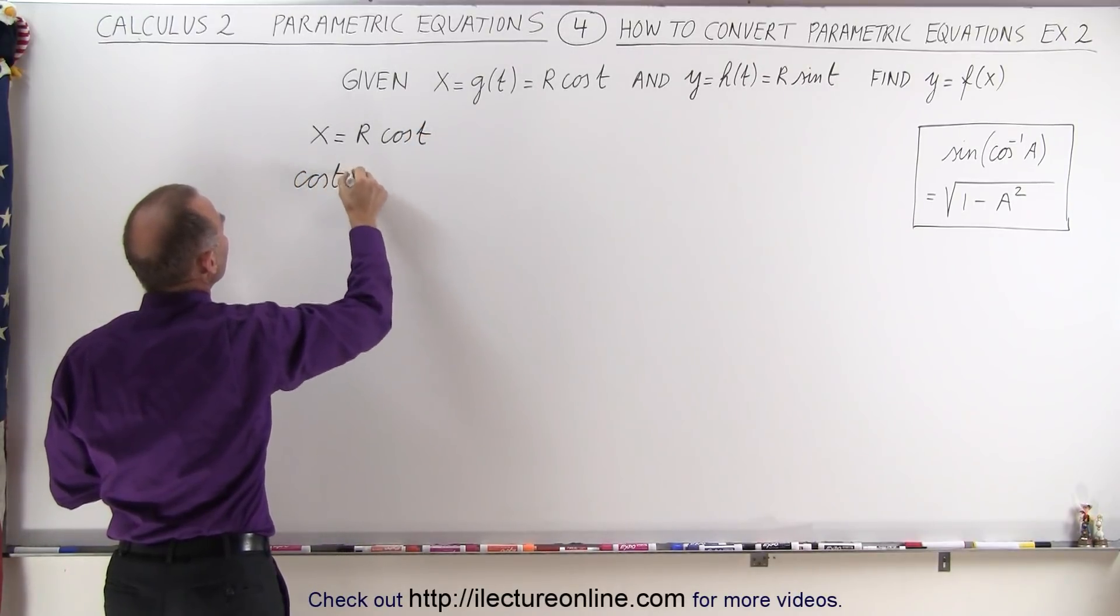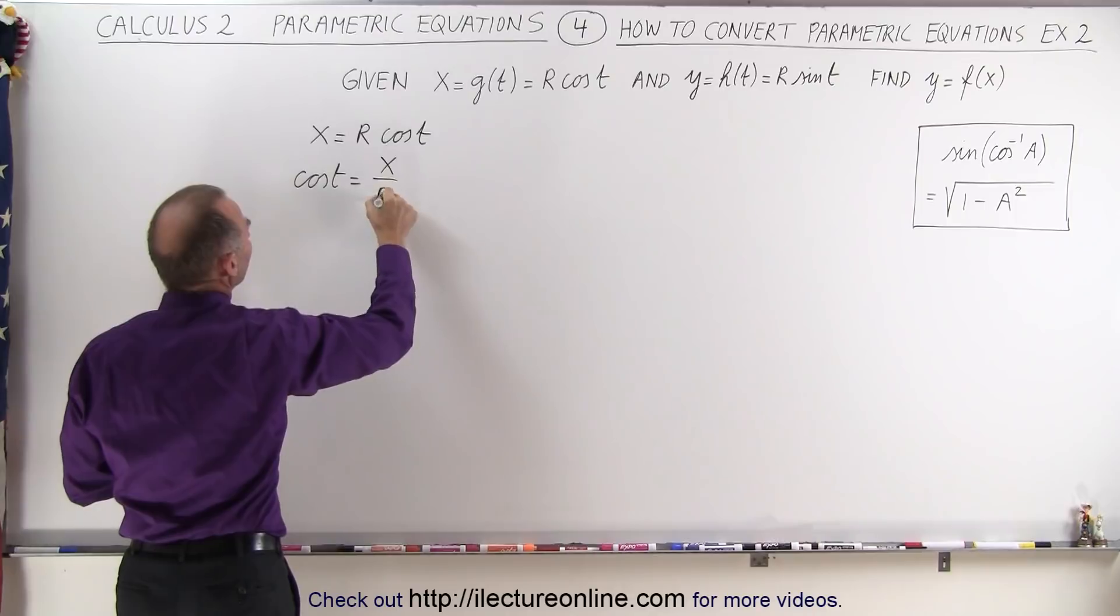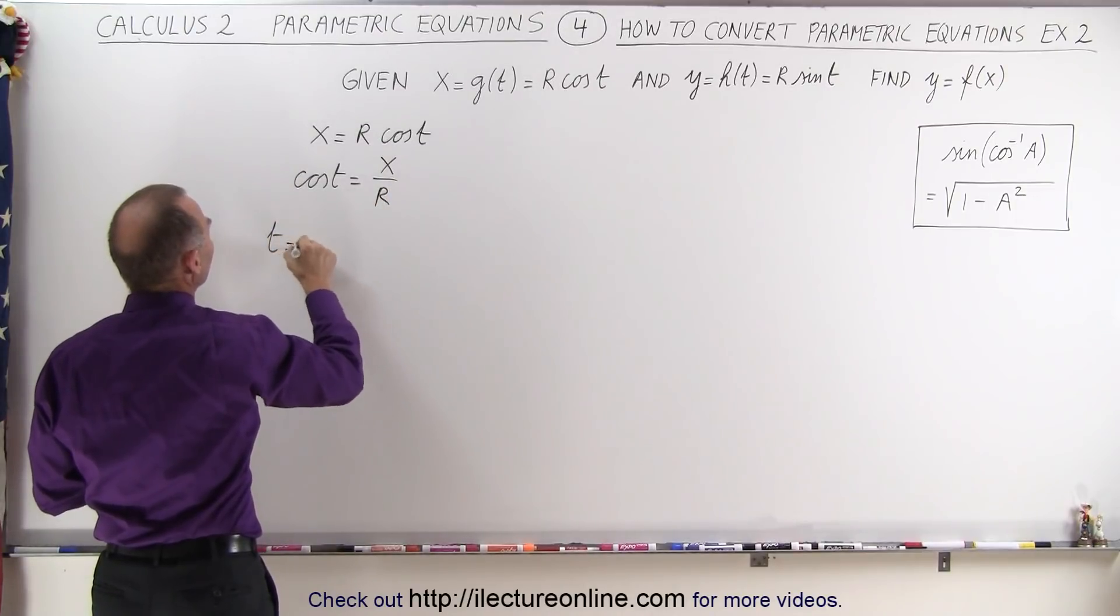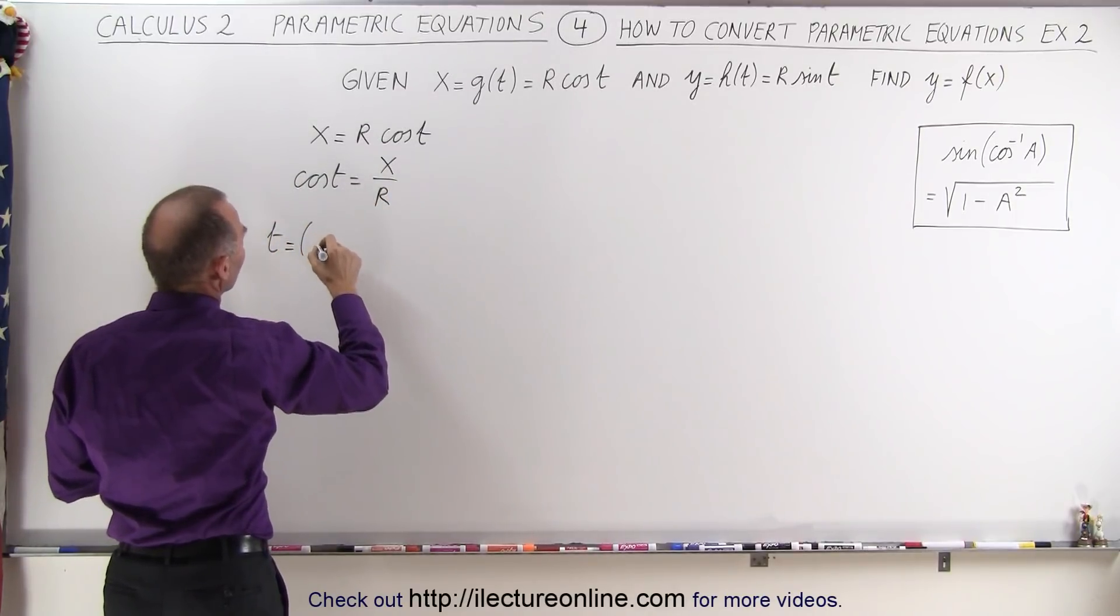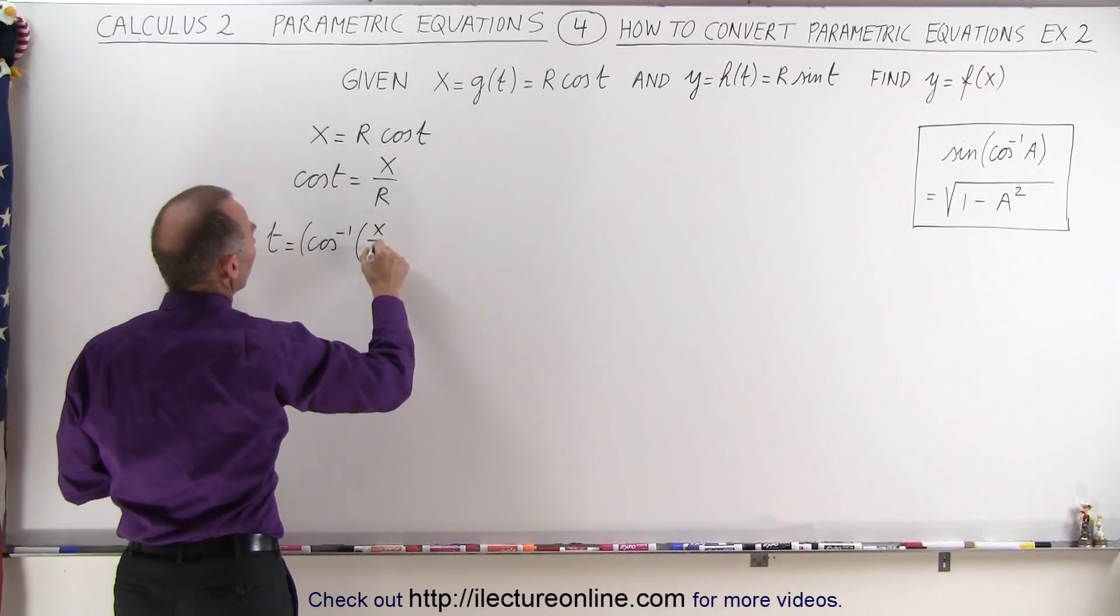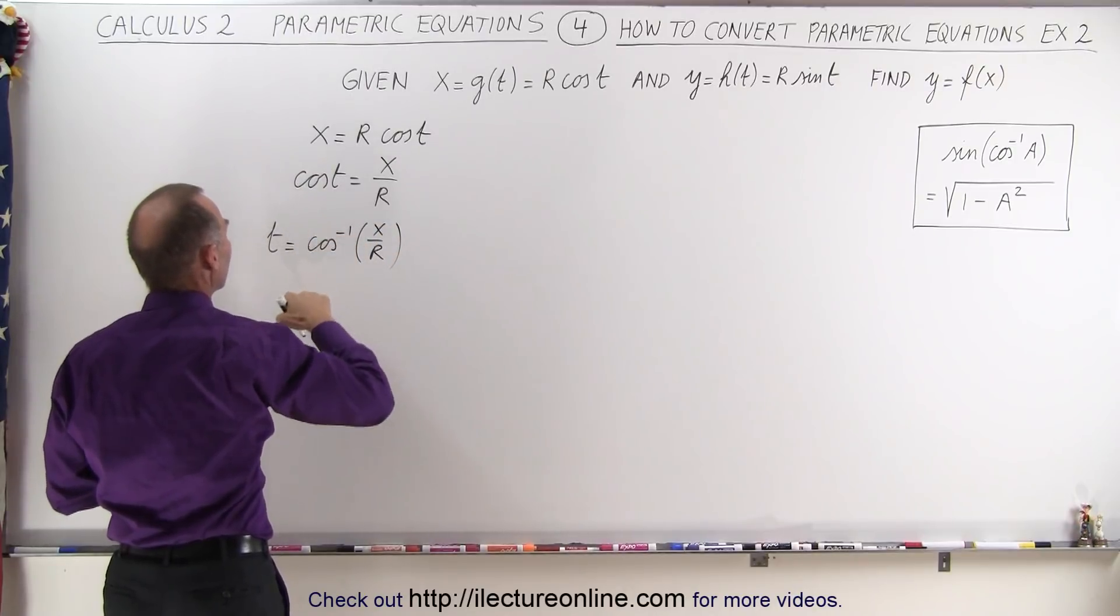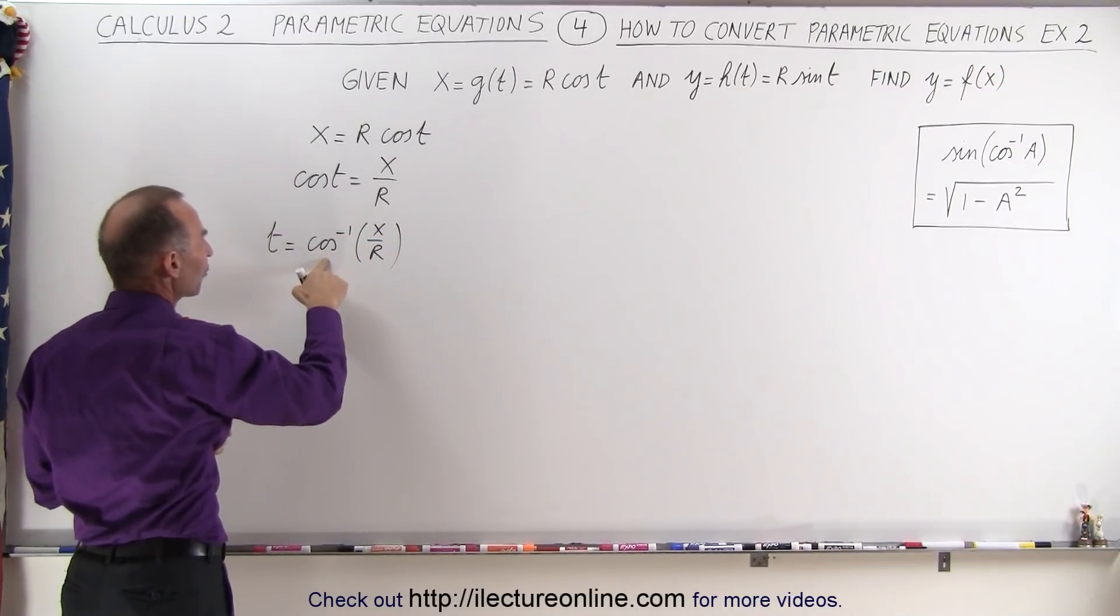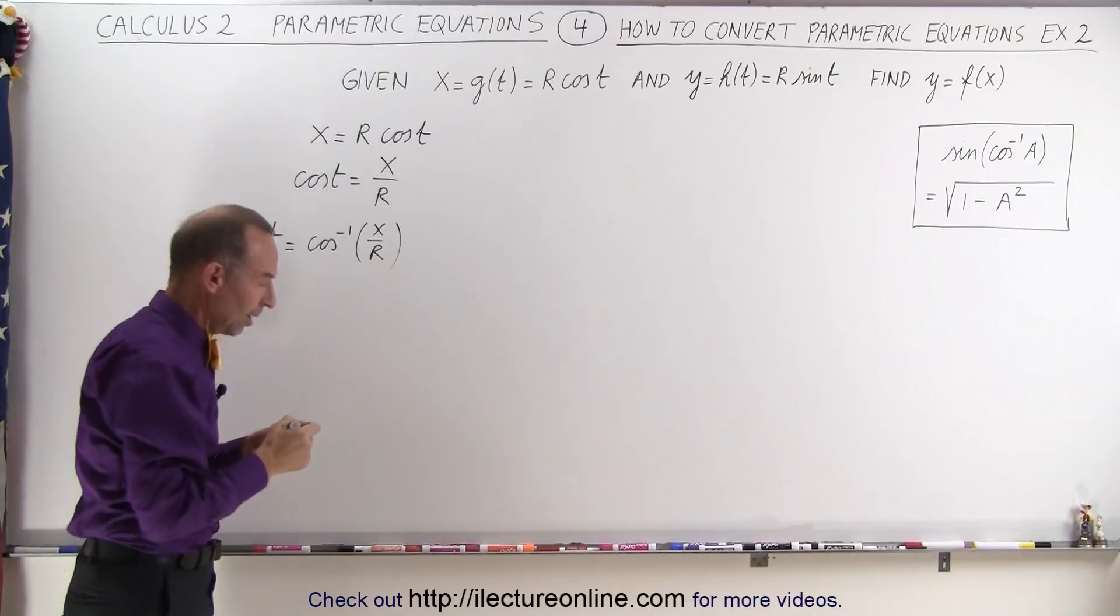that cosine of t is equal to x divided by r, which means that t is equal to the inverse cosine of x over r. So t equals the inverse cosine of x over r.